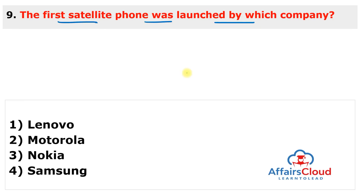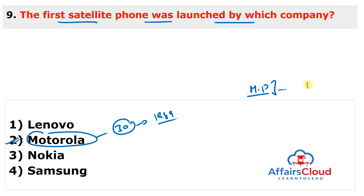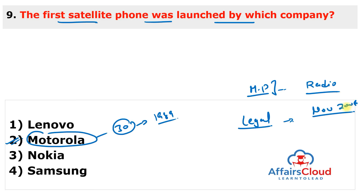Next question: which company launched the world's first satellite phone? The answer is Motorola, launched about 30 years ago, in 1989. A satellite phone is a type of mobile phone that connects to other phones or the telephone network via radio through orbiting satellites, instead of terrestrial cell sites. Satellite phones are not legal in India unless you have permission. Restrictions on their possession were tightened after Pakistani terrorists who attacked Mumbai in November 2008 used these devices to communicate with their Lashkar-e-Taiba handlers.